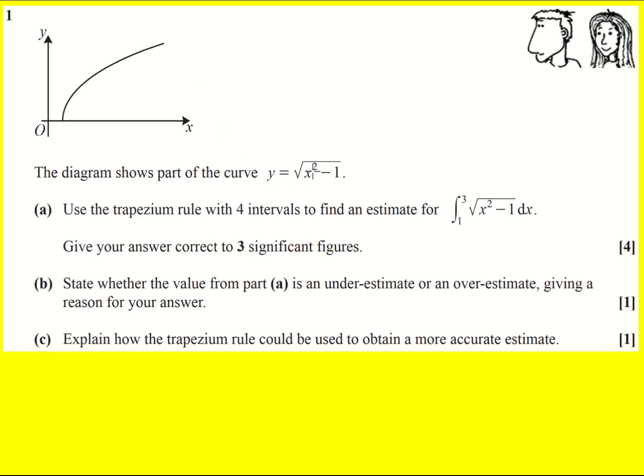We've got this curve y equals the square root of x squared minus 1. We're asked to use the trapezium rule with four intervals to find an estimate of the integral between x equals 1 and x equals 3.